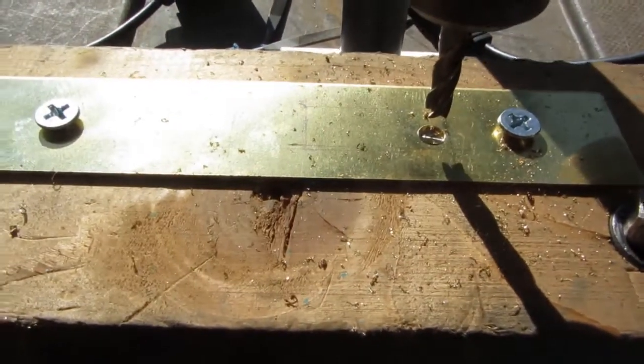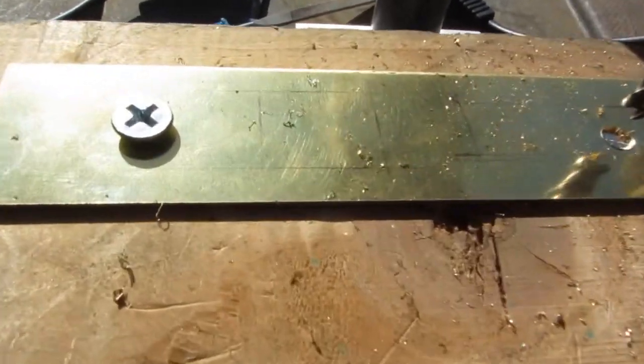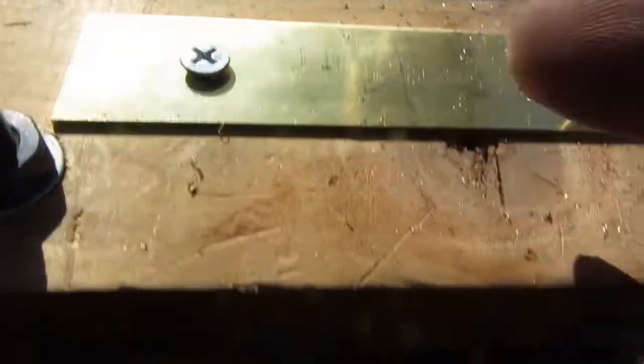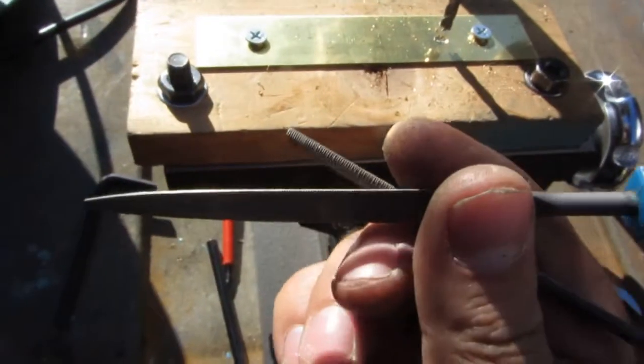See now, once we go through this two millimeter plate we mill along and then once we've got it cut out roughly we do the same with that one and then we neaten it up with a couple of warding files. And then we have a face plate that's for this lock.